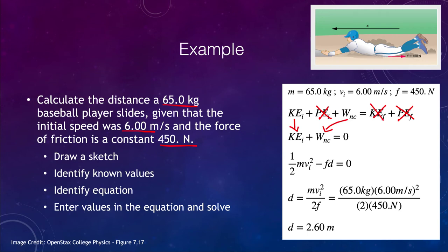This is an example of working with a non-conservative force. It could be made more complicated if there were a change in potential energy or if the player did not stop, in which case we'd need to include the final kinetic energy as well. But this gives you a start on how to handle non-conservative forces in the work-energy theorem.